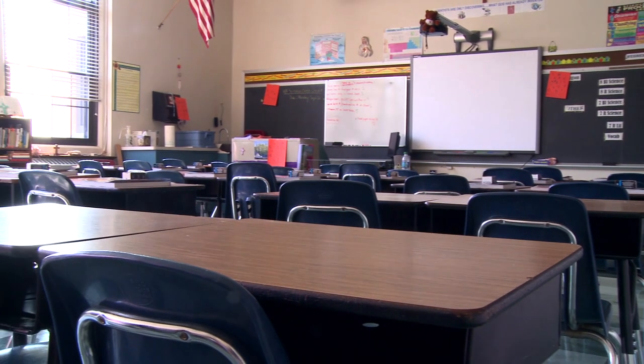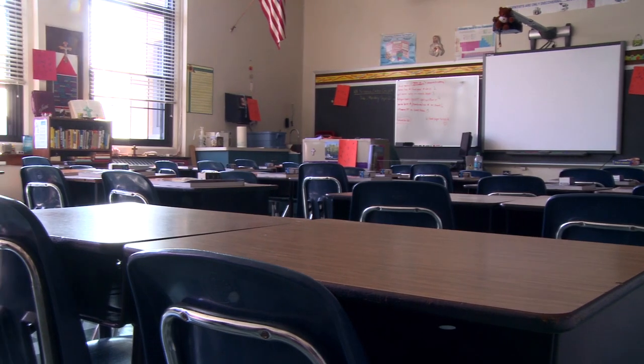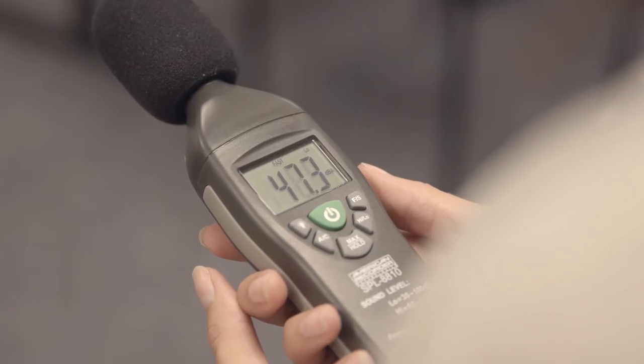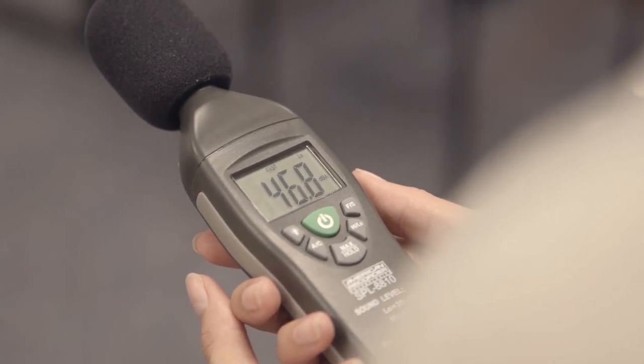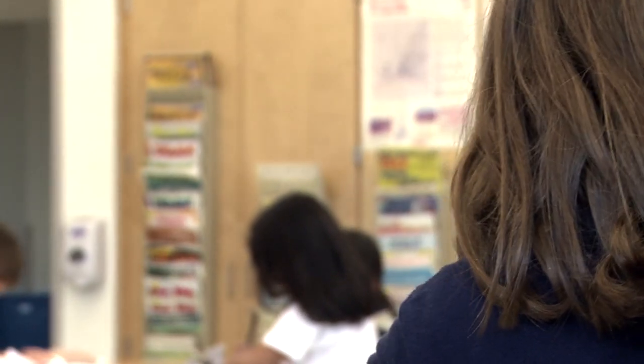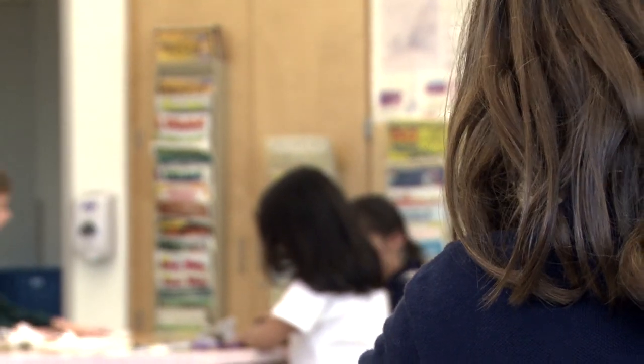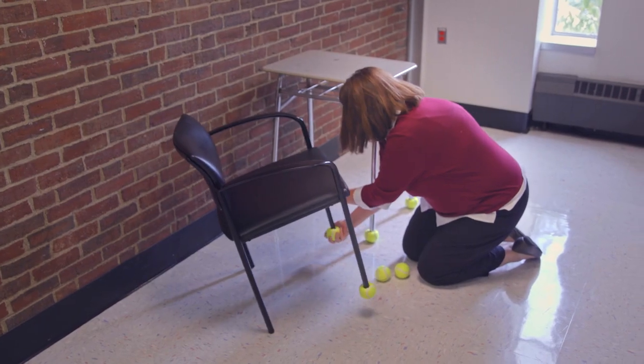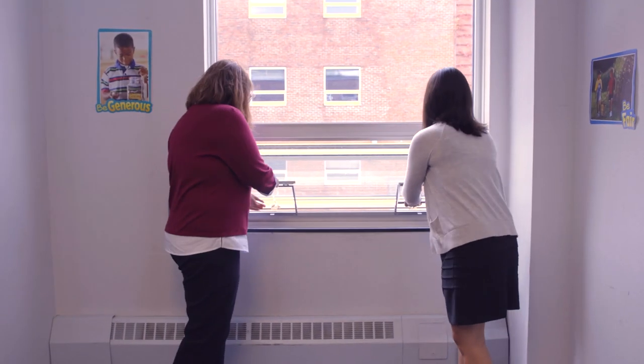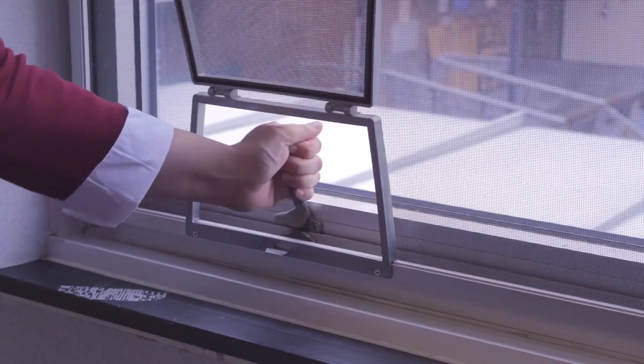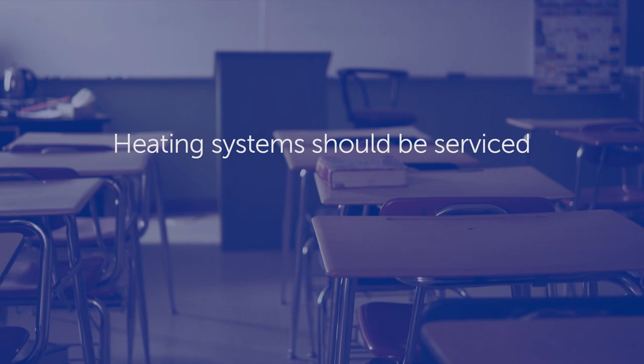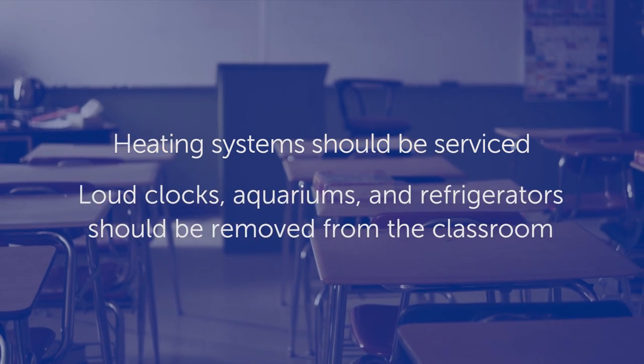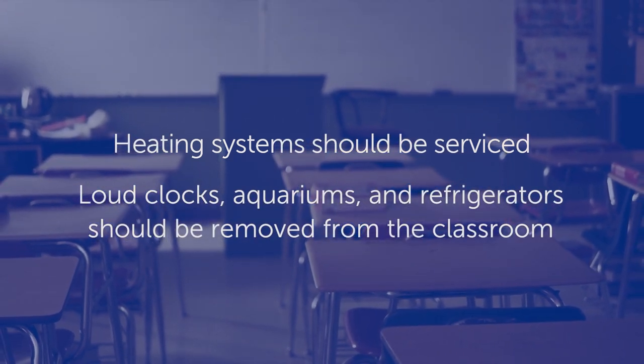Noise and reverberation are especially detrimental to students who are deaf or hard of hearing. Classroom acoustics should be evaluated by an educational audiologist prior to the start of school. In many rooms, low-cost modifications can be implemented, such as the addition of area rugs or covers for chair feet. Noise sources should be reduced or eliminated. Heating systems should be serviced, and loud clocks, aquariums, and refrigerators should be removed from the classroom.